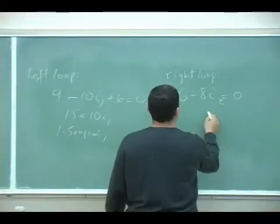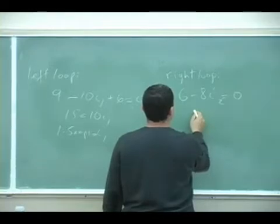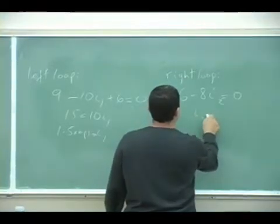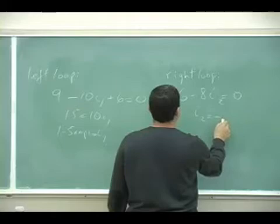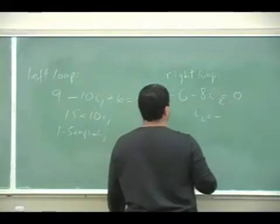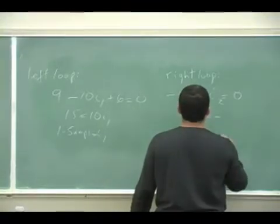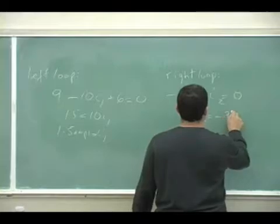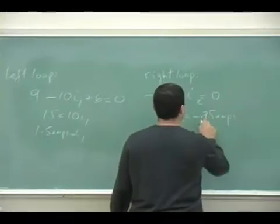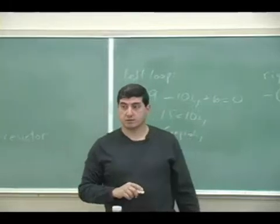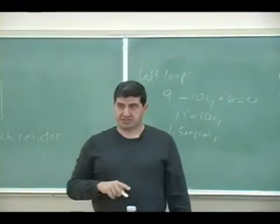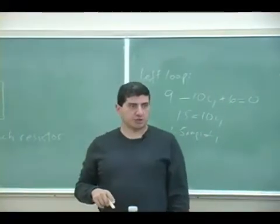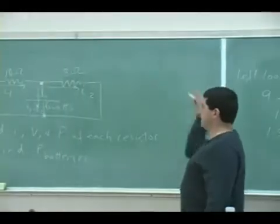So I2 would equal negative, it's going to be negative current. So negative 6 over 8, so that's 0.75 amps. What that means is that really the direction of the current is the other way.